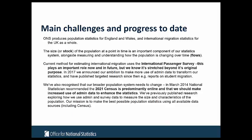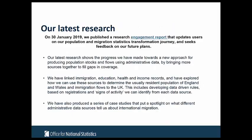We've also recognised that the broader population system needs to change and make more use of administrative data sources. Back in March 2014, the National Statistician recommended that the 2021 census be predominantly online and that we make increased use of admin data to enhance those statistics. We've already published a number of pieces of research on how we can use admin and survey data to measure the size and characteristics of the population. Now I'll move on to talk about our very latest research.